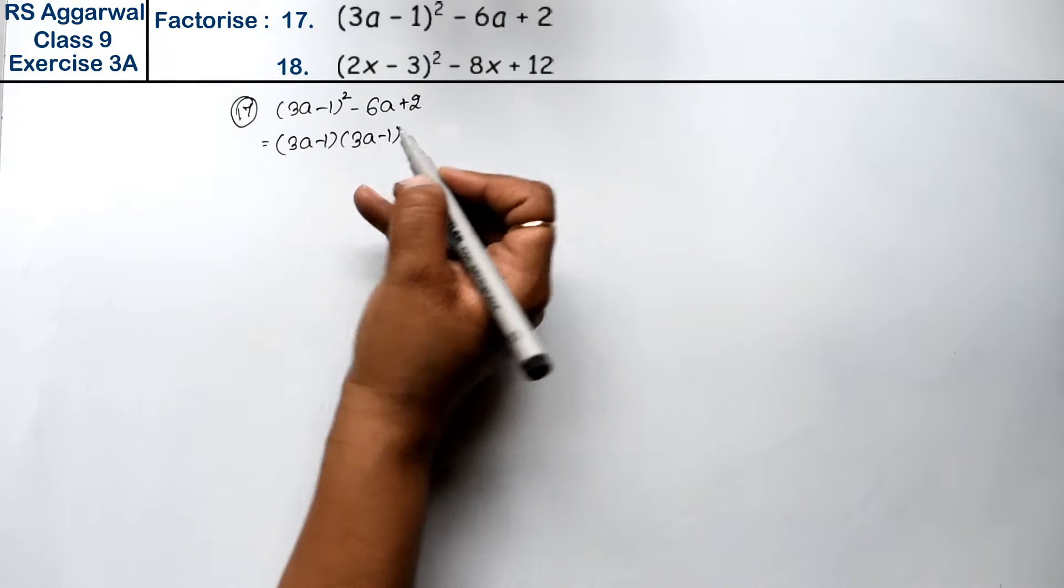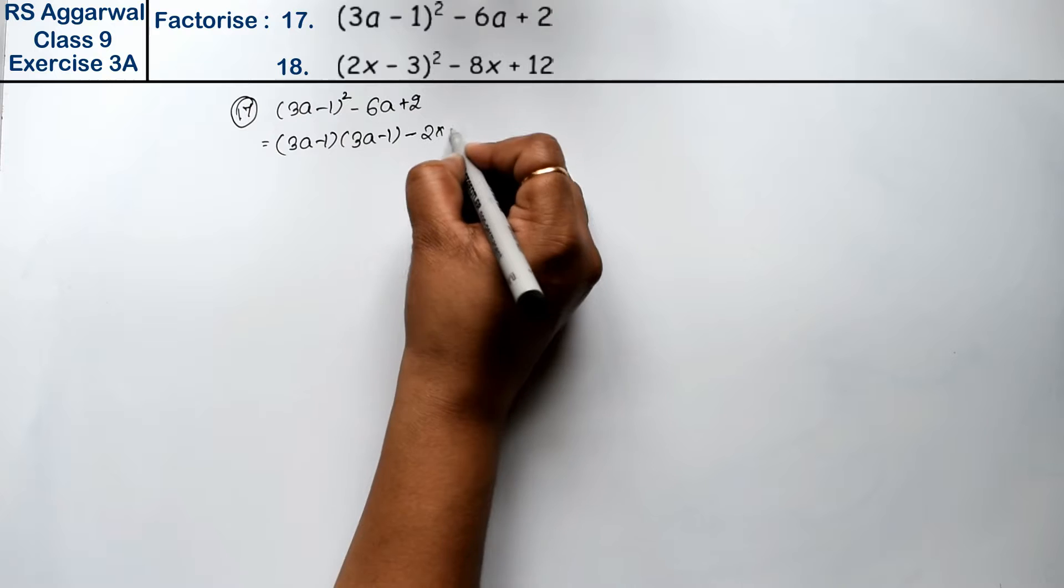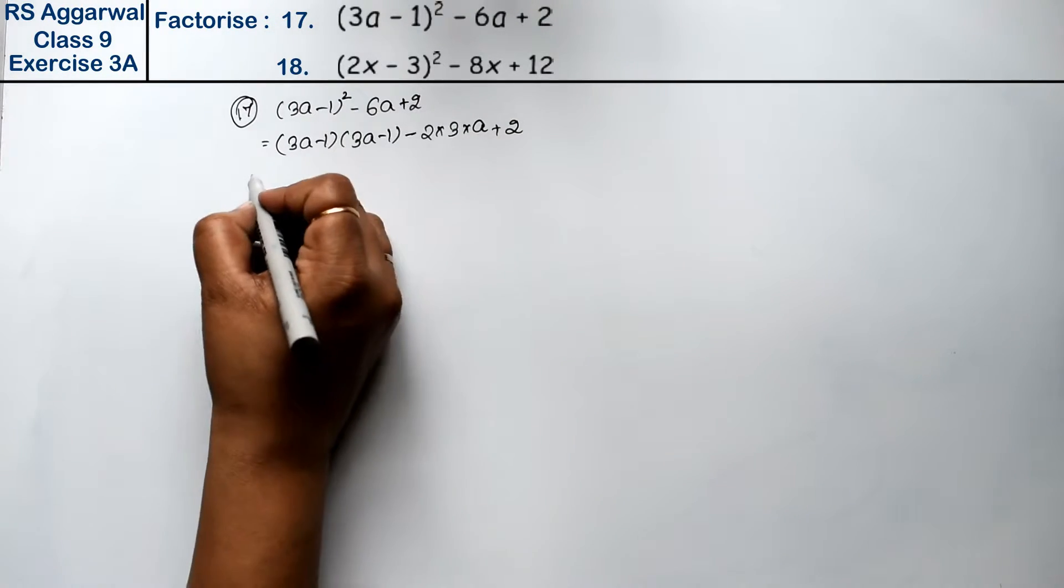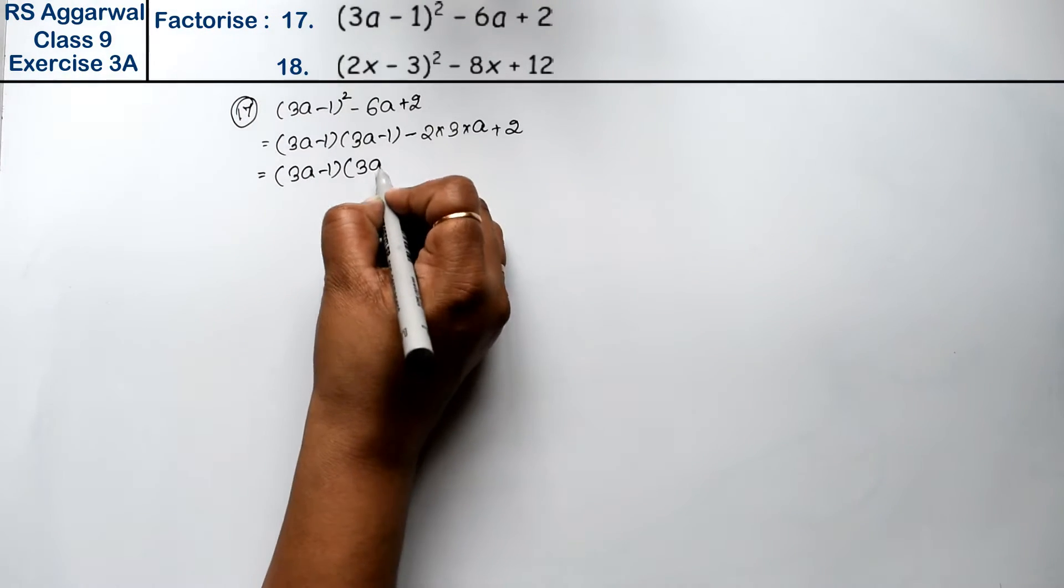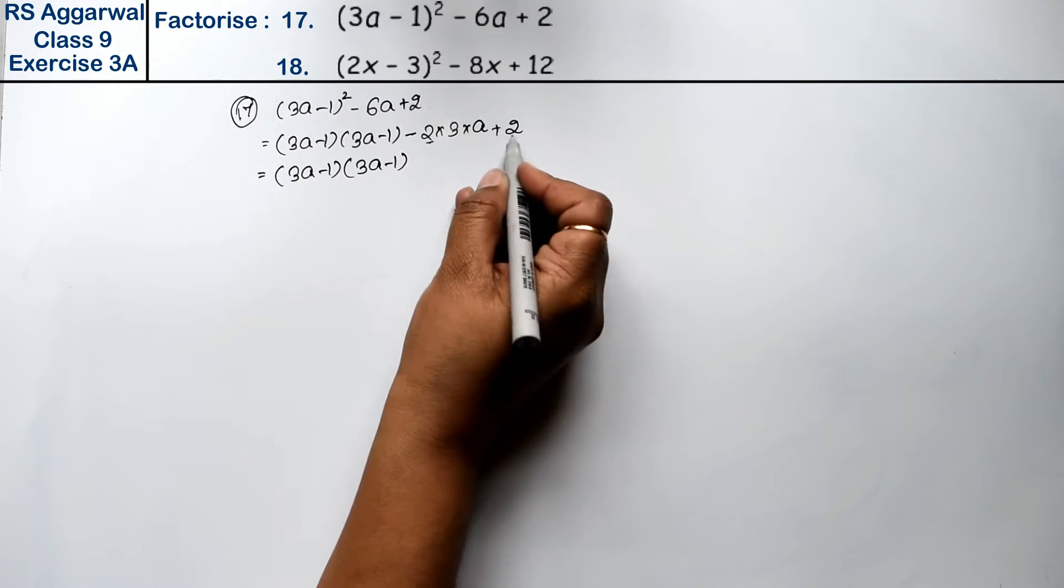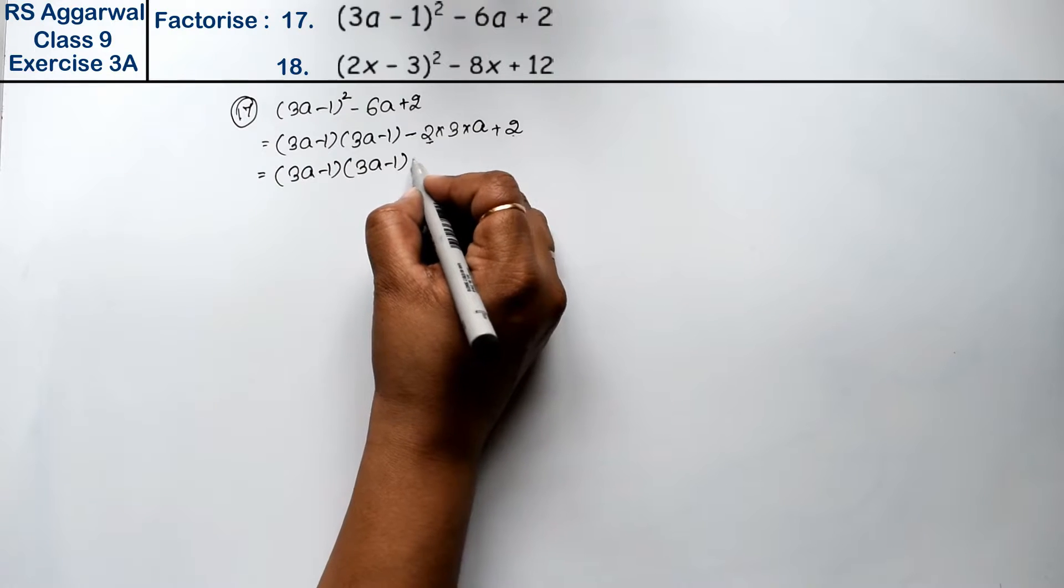We can write this as 2 also. Now let's see, (3a - 1) into (3a - 1), and now if we take these two and combine them, what comes common? 2 comes common. Since we have minus, we'll take minus 2 common.